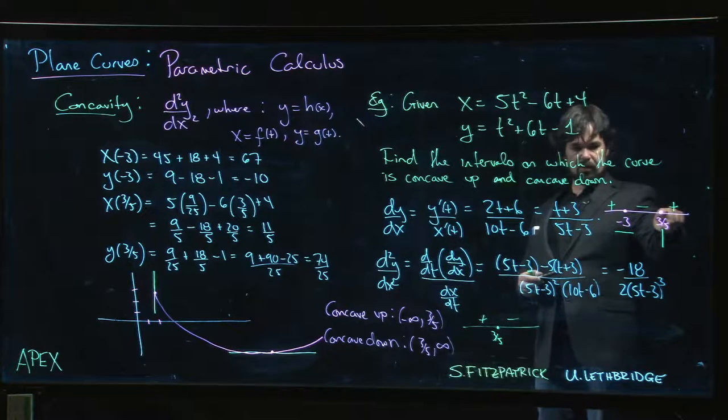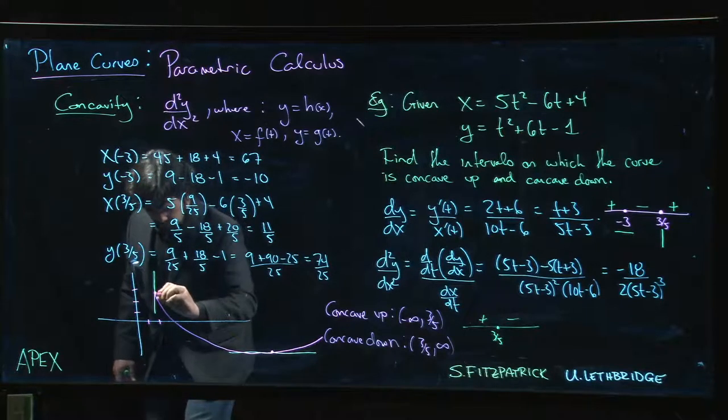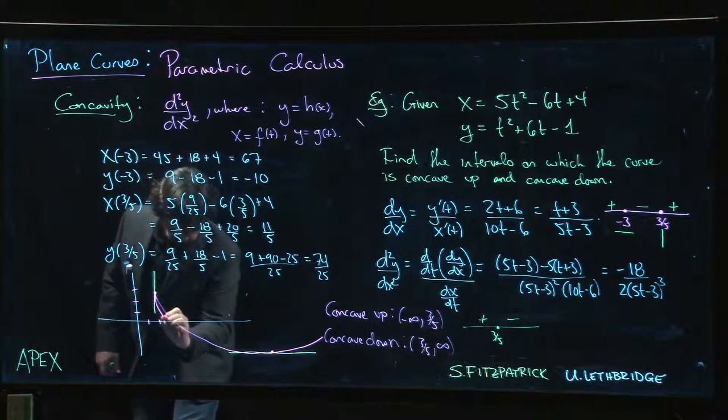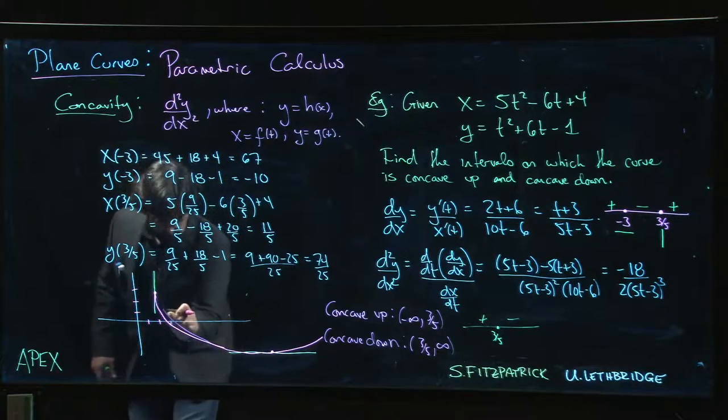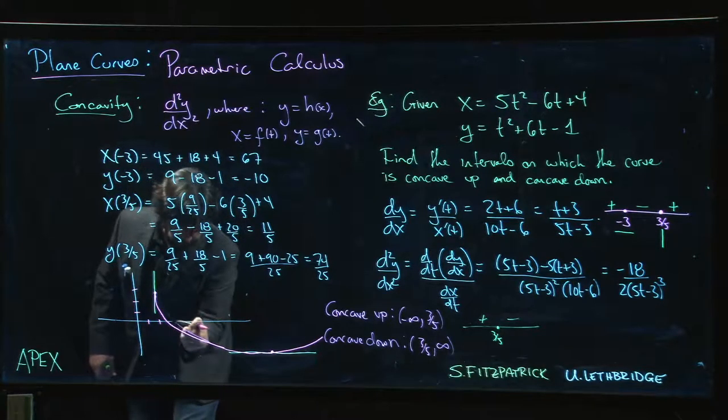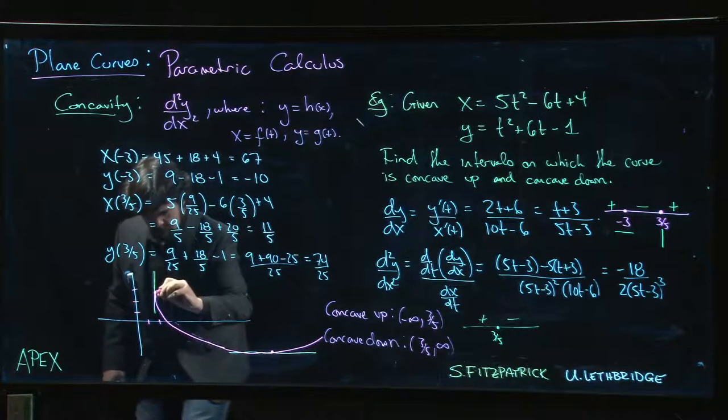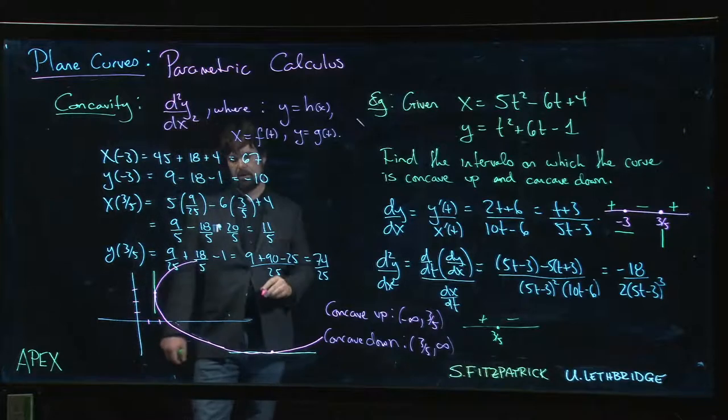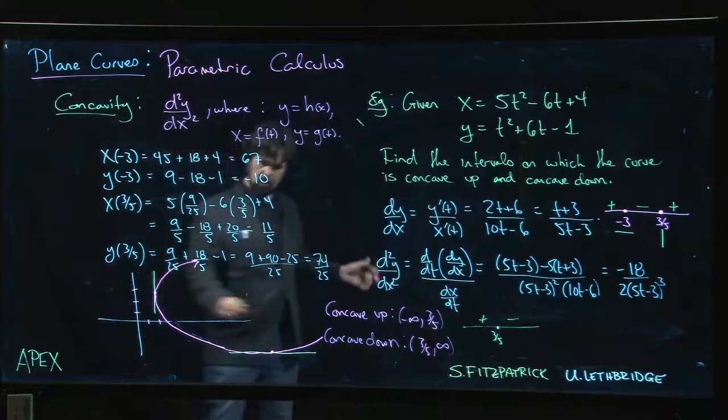And we should be increasing once we pass the vertical tangent, increasing and concave down. So increasing, we need to exaggerate this a bit to get to that vertical tangent. So now we get something that looks like that.